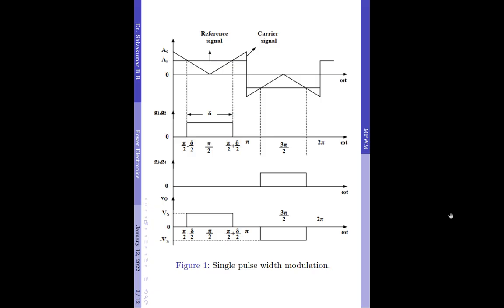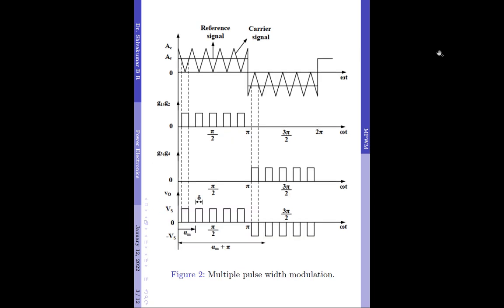In my previous two videos, I have already discussed two Pulse Width Modulation Control Techniques for controlling the output of a single phase full bridge inverter. The first technique was the Single Pulse Width Modulation Control Technique — the waveforms for the same are shown in the figure here. You can watch the video on Single Pulse Width Modulation by clicking the link shown in the top right corner. The second PWM technique I discussed is the Multiple Pulse Width Modulation Control Technique. The waveforms for Multiple Pulse Width Modulation are shown in figure 2 here, and you can watch that video by clicking on the link shown here.